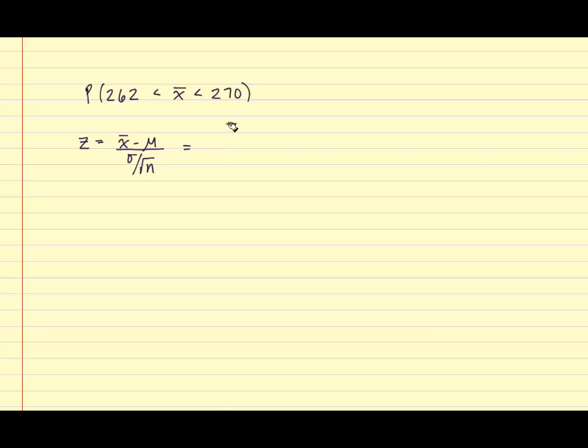We're going to convert 262 to a z-score as well as 270 to a z-score. For 262, I have 262 minus mu of 266 divided by sigma, and in the problem sigma was 16, and we had a sample size of 64 pregnancies. That is equal to negative 2.